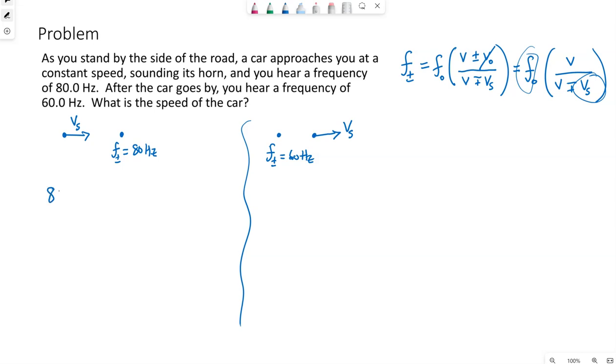So in the first case, with the car driving towards us, the frequency that we hear is 80. That would equal the actual frequency that we don't know times, we're going to use the speed of sound as 343 because they haven't given us a temperature or any other value to use. Thus, we assume the 343. The V of the source is the speed of the car, that's what we are looking for.